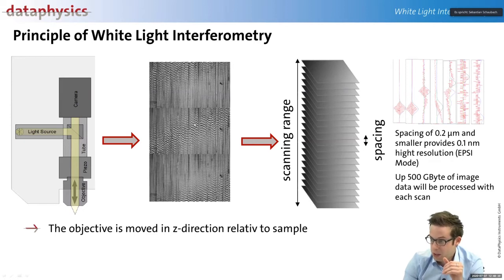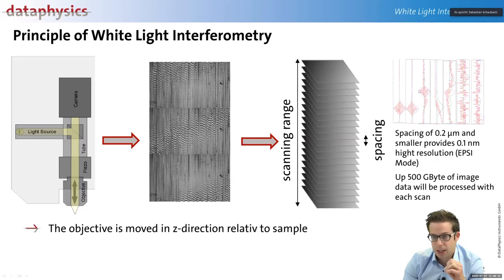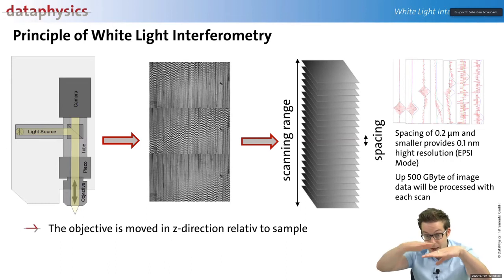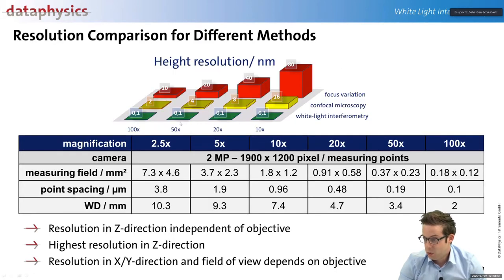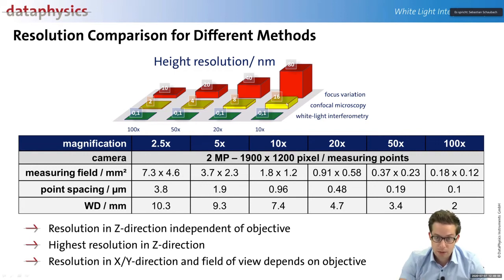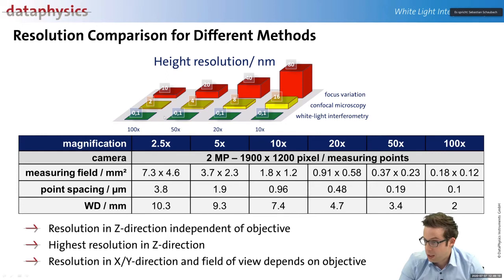We scan layer by layer and make an interference image on the surface at the same time. Compared to focus variation or confocal microscopy, where height resolution is typically in the higher nanometer range, we use white light interferometry — producing interferograms on the surface — which achieves extremely high resolution in the Z direction. Importantly, for all objectives you can use, the height resolution is always exactly the same.